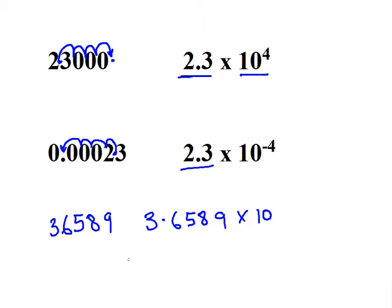That's the basic form that we take, and then we have to ask ourselves, how do we go back to what we started with? So in this case, we would have to move our point 1, 2, 3, 4 times, so 10 to the power of 4. So we'd have 3.6589 times 10 to the power of 4 as an answer.